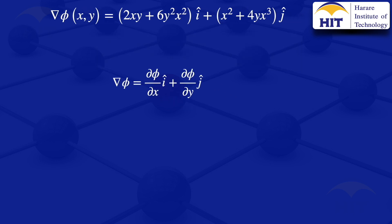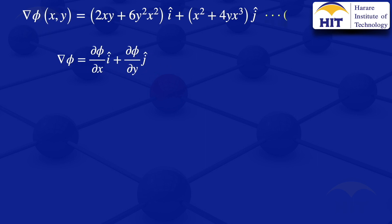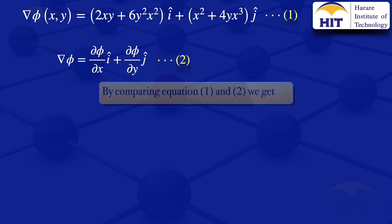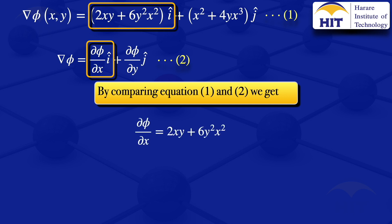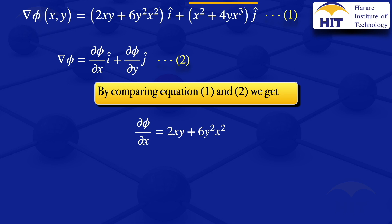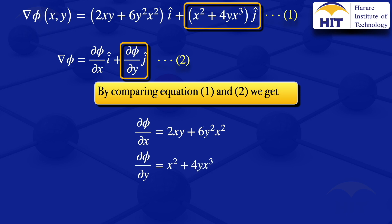We have those two gradient components. I will label the first one equation 1 and the second one equation 2. Comparing the i-components of both equations, we see that the partial derivative of φ with respect to x equals 2xy + 6y²x². Comparing the j-components, we see that the partial derivative of φ with respect to y equals x² + 4yx³.